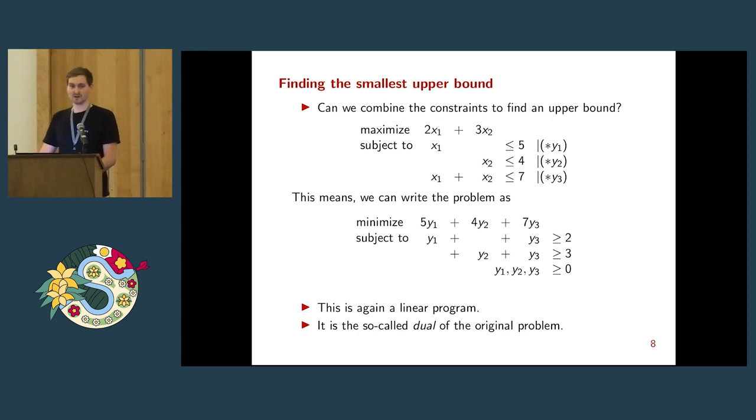Now we realize, and of course I need non-negative y's, otherwise I would flip the inequalities. But now you look at it and say, that looks an awful lot like a linear program. I mean, we started with a linear program, now we kind of did this trick, and we again get a linear program. And indeed what we just found is the so-called dual of the original problem.